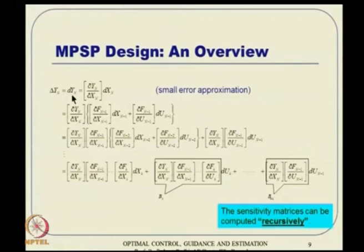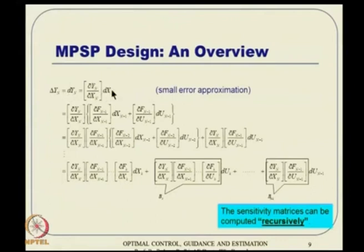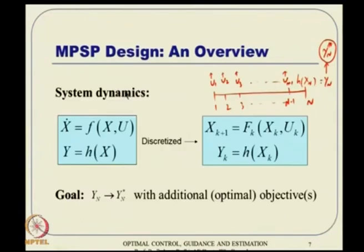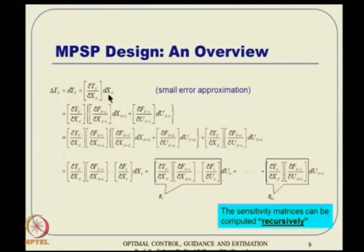Here we introduce a small error approximation. It demands that you start with a reasonably good guess, but it turns out it is not too sensitive. We can start with a large error as well, but theoretically, delta_y_n is approximated as d_y_n. Using this small error approximation, d_y_n = (∂y_n/∂x_n) · dx_n. Since y is a function of x, any error in y must come through an error in x.